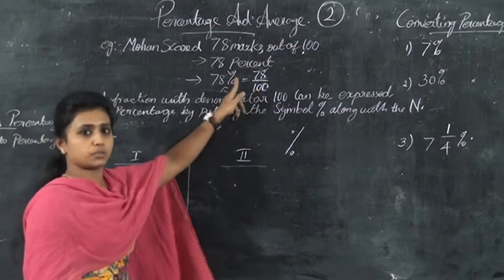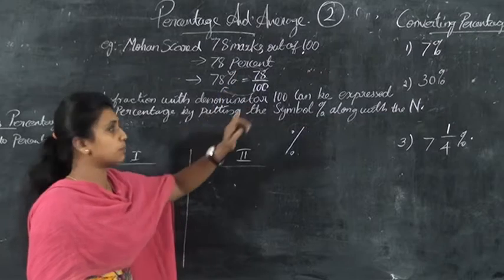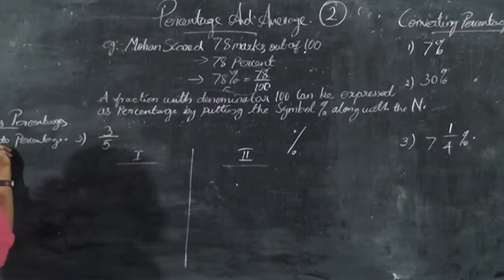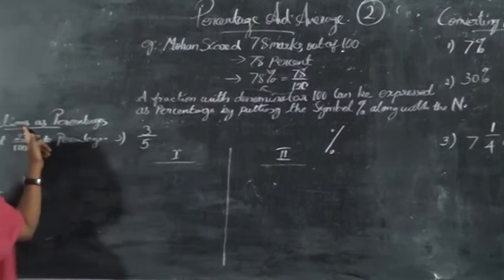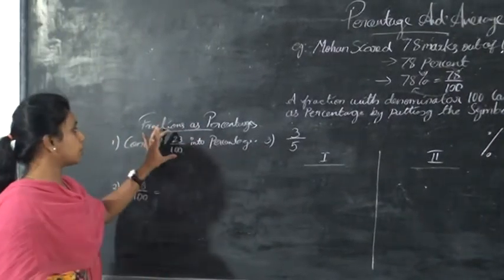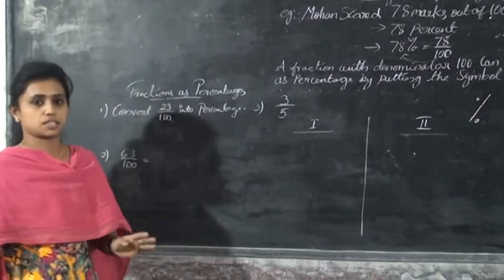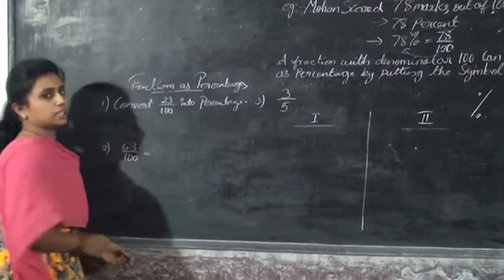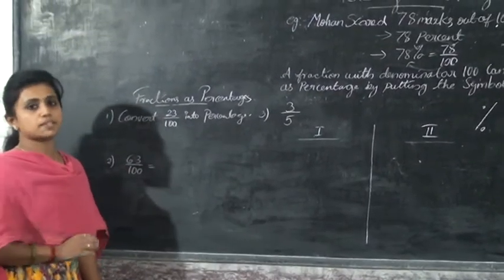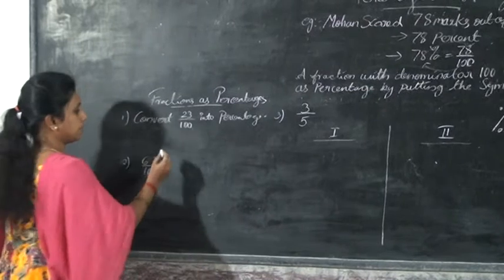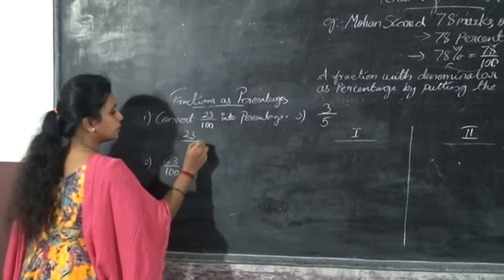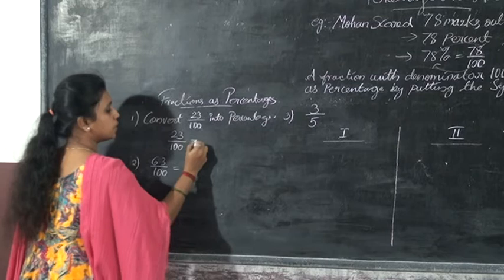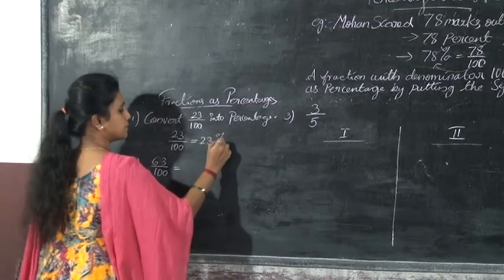Now look at this one. How will you convert a fraction as a percentage? If you want to convert a fraction into a percentage, just remember: if the denominator is already hundred, it is easy. For example, 23 by hundred is equal to 23 percent.